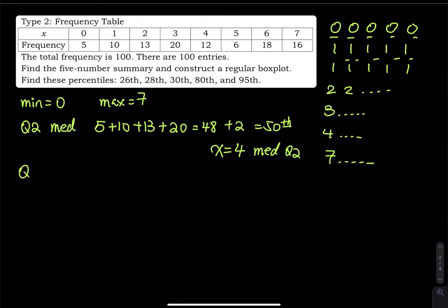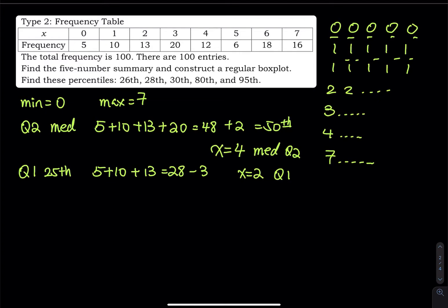Now Q1 is the 25th percentile. We do five plus ten, which is only fifteen. If you add thirteen, that equals twenty-eight, which is already more than twenty-five. So you have to take three steps back. Thirteen corresponds to x equals two, and if you take three steps back, you're still within that group of thirteen. So x equals two is Q1.